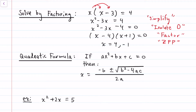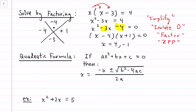Then the big step: we factor and then set each of the factors equal to zero in something known as the zero product property, or ZPP for short. Now that factoring step is kind of interesting. We're looking for two numbers that simultaneously multiply to the last number, which is negative four, and add to the middle one, negative three.